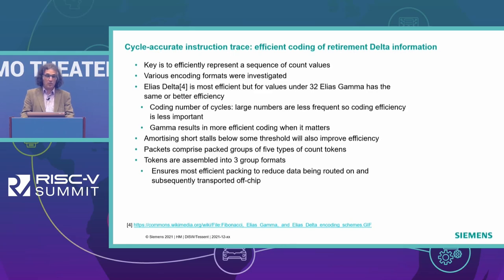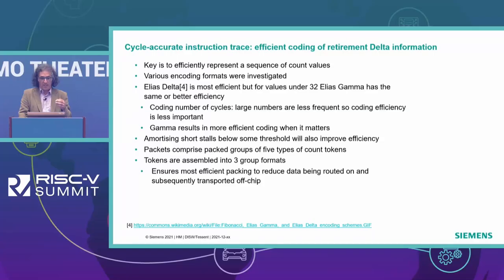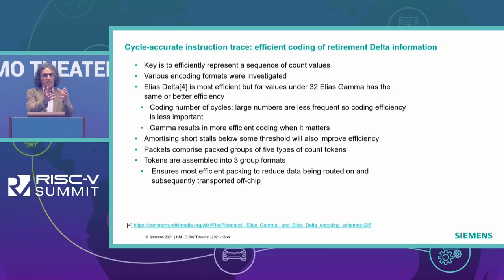The amortization of short stalls below some threshold will also yield improved efficiency, because rather than reporting individual numbers, we end up reporting an overall number that improves reporting efficiency. We represent those numbers into different types of count tokens — there are five types — and those tokens are assembled into three group formats. This increases packing efficiency and reduces the amount of data that needs to be sent from the encoder IP through the trace infrastructure off-chip.